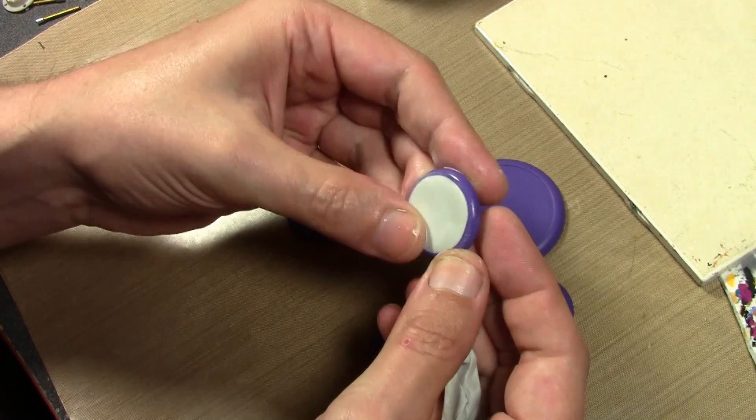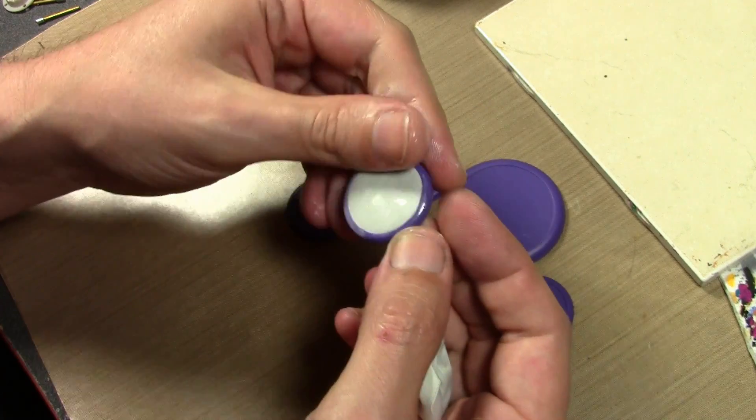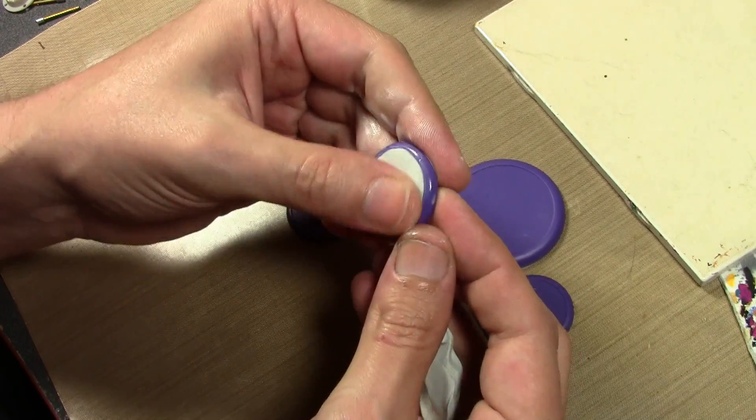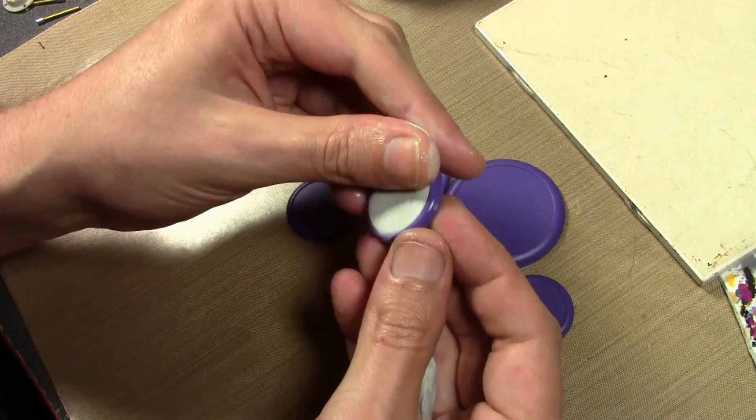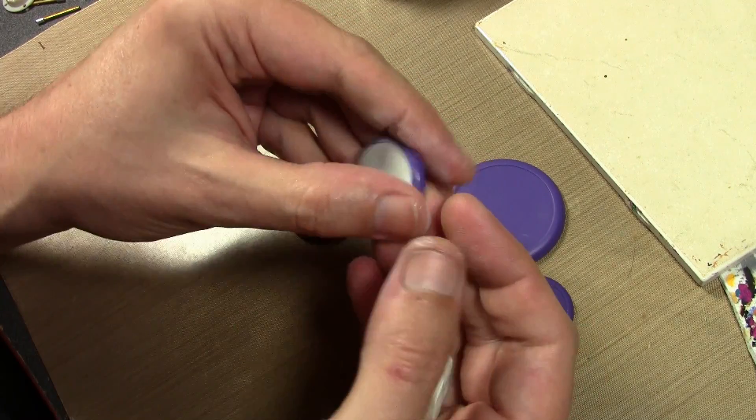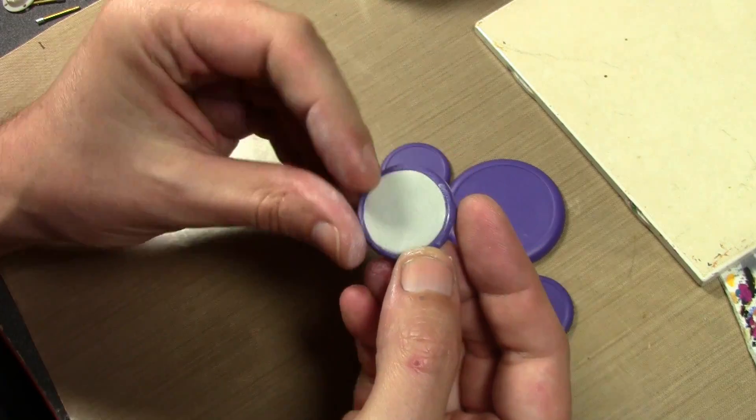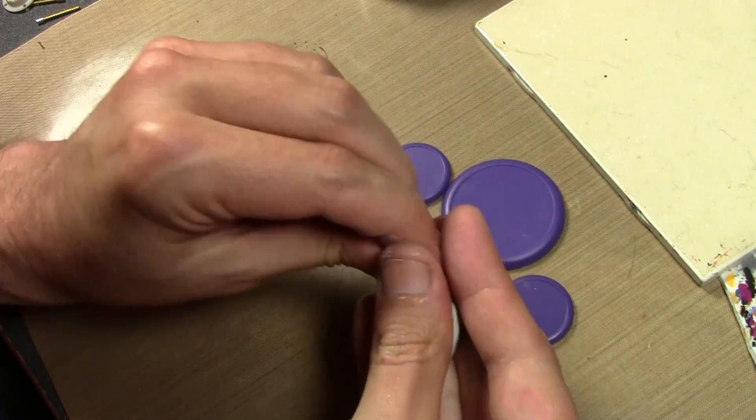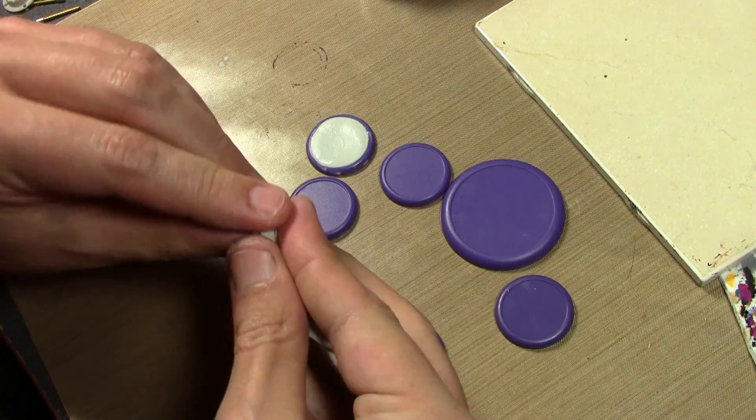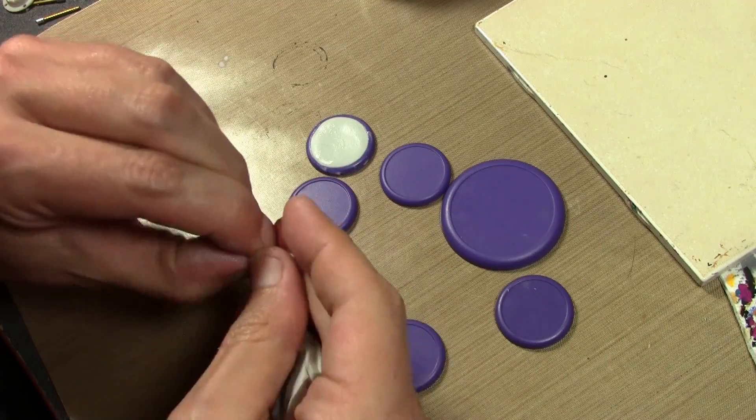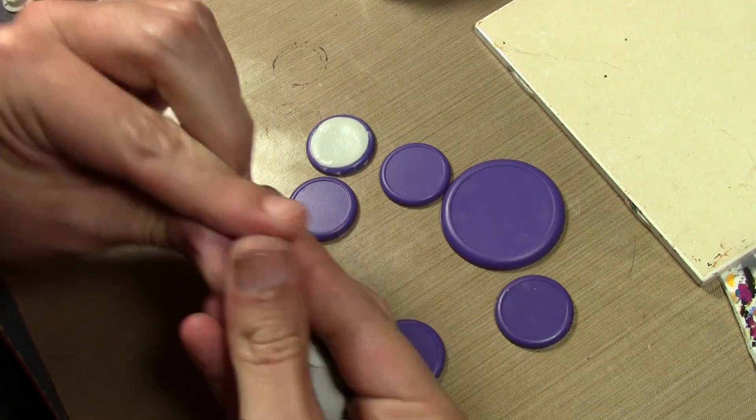First thing we need is some epoxy putty, this is Magic Sculpt, in case you're interested in the brand. And it takes just a little amount to fill in that little concave area on your round lip bases. So just press it on and smooth it out, you can use a little water on your finger and just try to get it as flat as possible.